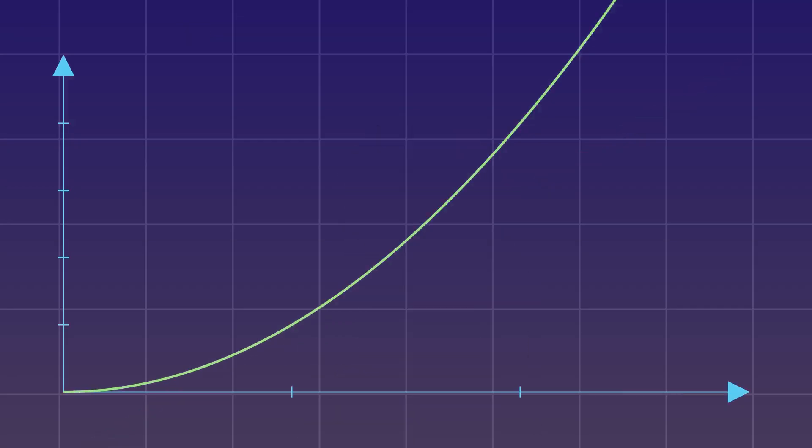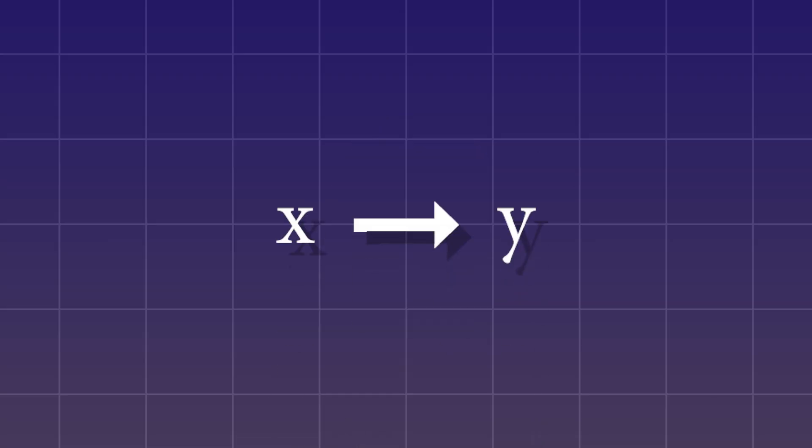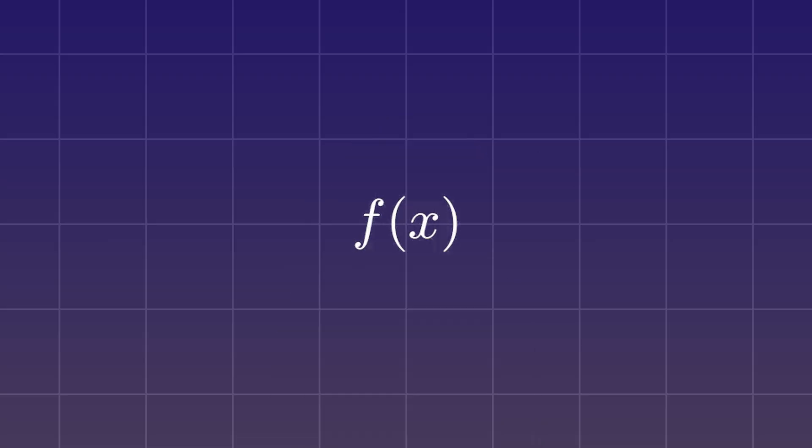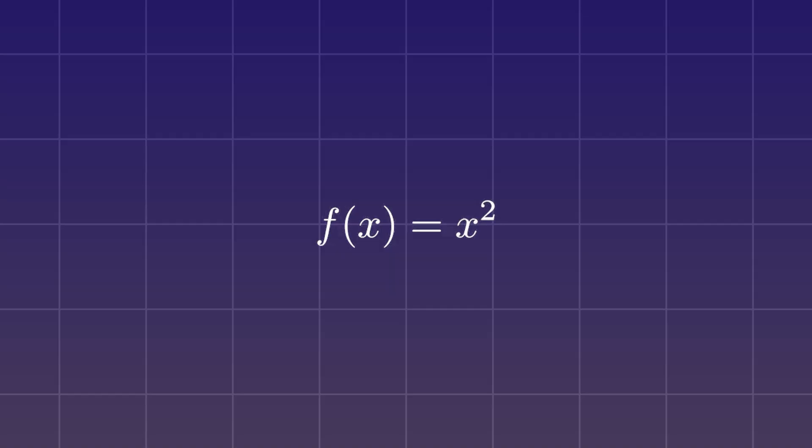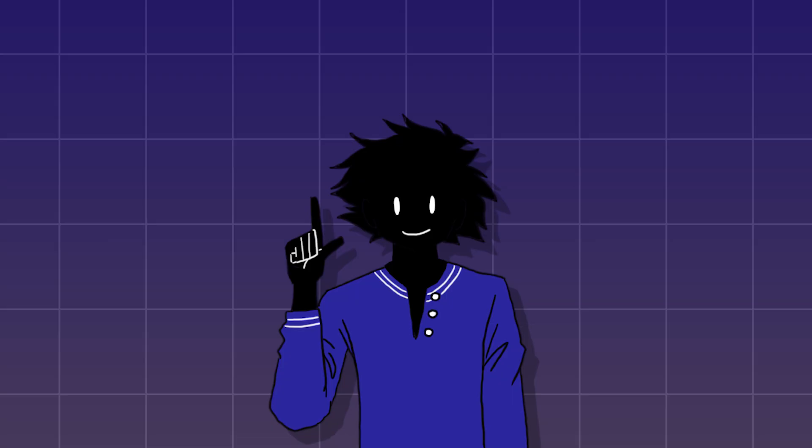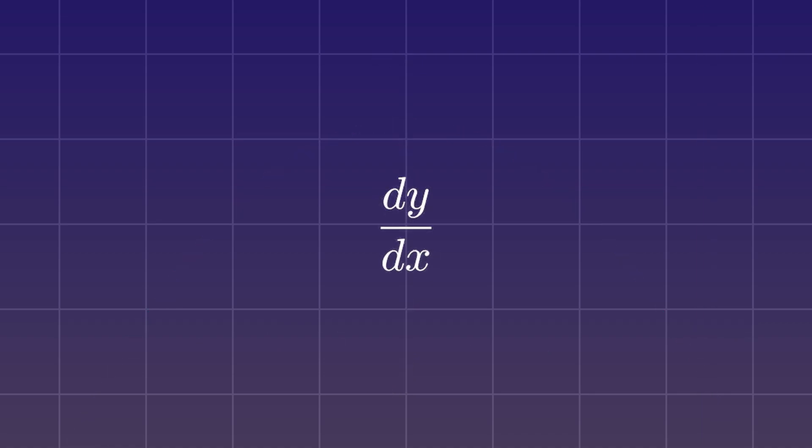Now, this line graph here is called a function. A function is a way that you find points on a graph. It usually takes an x value as an input, and gives you a y value as an output. Basically, what do you have to do to x to get y? Functions are written like this, and are pronounced f of x. So, our graph was f of x equals x squared, which means in order to get the y value, we have to take the x value and square it. Not all graphs are functions, though. They usually have to pass something called the vertical line test, which means if you pass a vertical line through the graph, it can only intersect at one point.